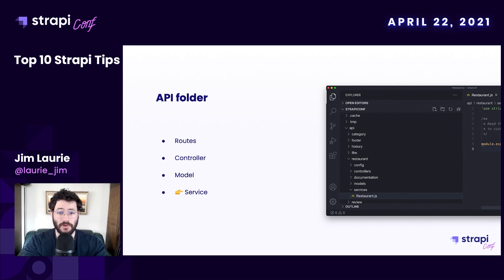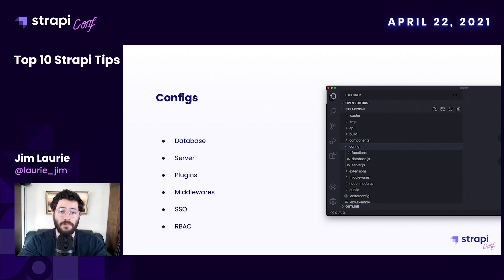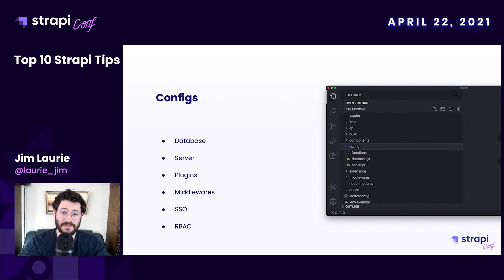You can find a components folder, which will contain all components of your application — components are data structures that are reusable in your content types. Then you have the config folder, which will contain configurations like the database configuration and other settings. There is also the query system to mention as a key concept, but I will talk about it in another tip.